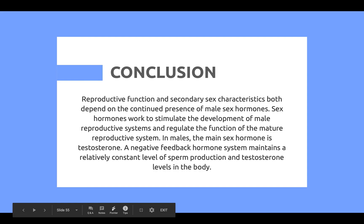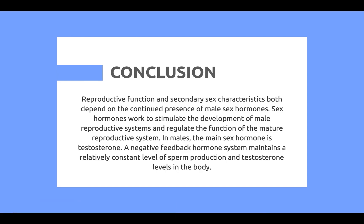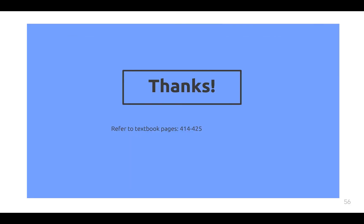In conclusion, reproductive function and secondary sex characteristics both depend on the continued presence of male sex hormones. Sex hormones work to stimulate the development of male reproductive systems and regulate the function of the mature reproductive system. In males, the main sex hormone is testosterone. A negative feedback hormone system maintains a relatively constant level of sperm production and testosterone in the body. You can refer to the textbook pages 414 to 425 for further reading on this topic.